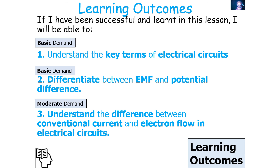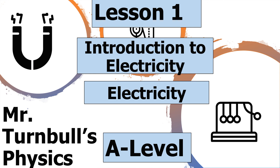If we've been successful in today's lesson, we should be able to understand the key terms of electrical circuits, differentiate between EMF and potential difference, and understand the difference between conventional current and electron flow in electrical circuits. Thank you very much for watching this lesson on an introduction to electricity, which is part of the electricity topic in AQA A-level physics. Have a lovely day.